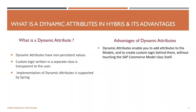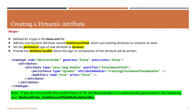Dynamic attributes are defined in the items.xml file, where we define the item type. If you are familiar with Hybris, you'll already know the concept of item types. For this tutorial, I will be creating a dynamic attribute named 'totalAmountPaid', which will be part of the AbstractOrder item type, and I will be setting the persistence type for that attribute to dynamic.